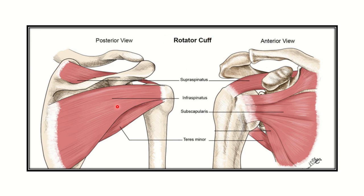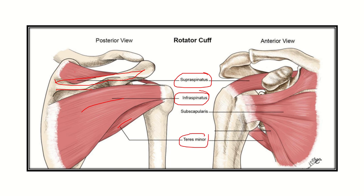Here you can see the rotator cuff muscles. Posteriorly, or on the dorsal aspect, there is the supraspinatus, which lies above the spine of the scapula. Below that is the infraspinatus, and then the teres minor. These three muscles are on the dorsal aspect of the shoulder joint. The subscapularis muscle is located on the anterior aspect of the shoulder joint. These four muscles are the components of the rotator cuff.